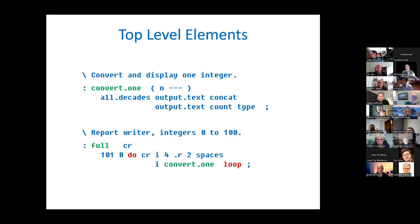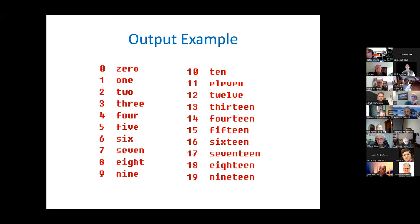Finally, we put a do loop around it. We set the range from 0 to 100, which is done by 101, 0, do. The I4.R2 spaces formats the number we're converting, and then we do the single conversion, convert one. This is done then 100 times. Now we see example of how it actually operates.